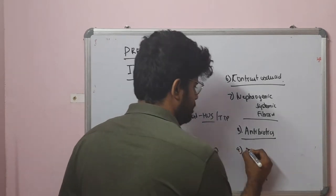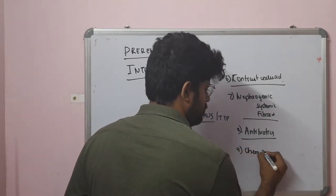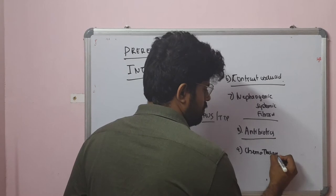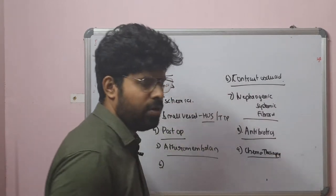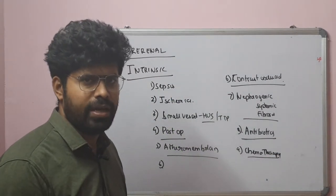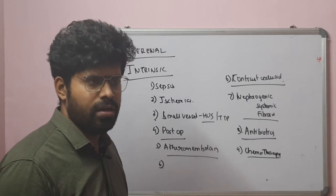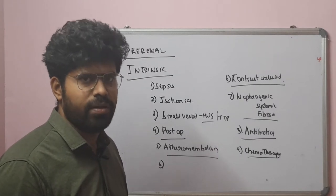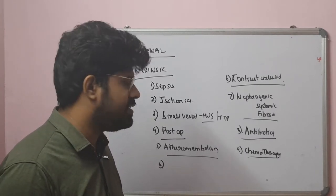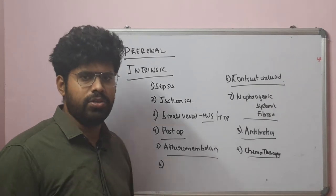Chemotherapy drugs causing AKI include cisplatin, carboplatin, ifosfamide, bevacizumab, mitomycin, and gemcitabine. All these drugs can cause acute kidney injury.